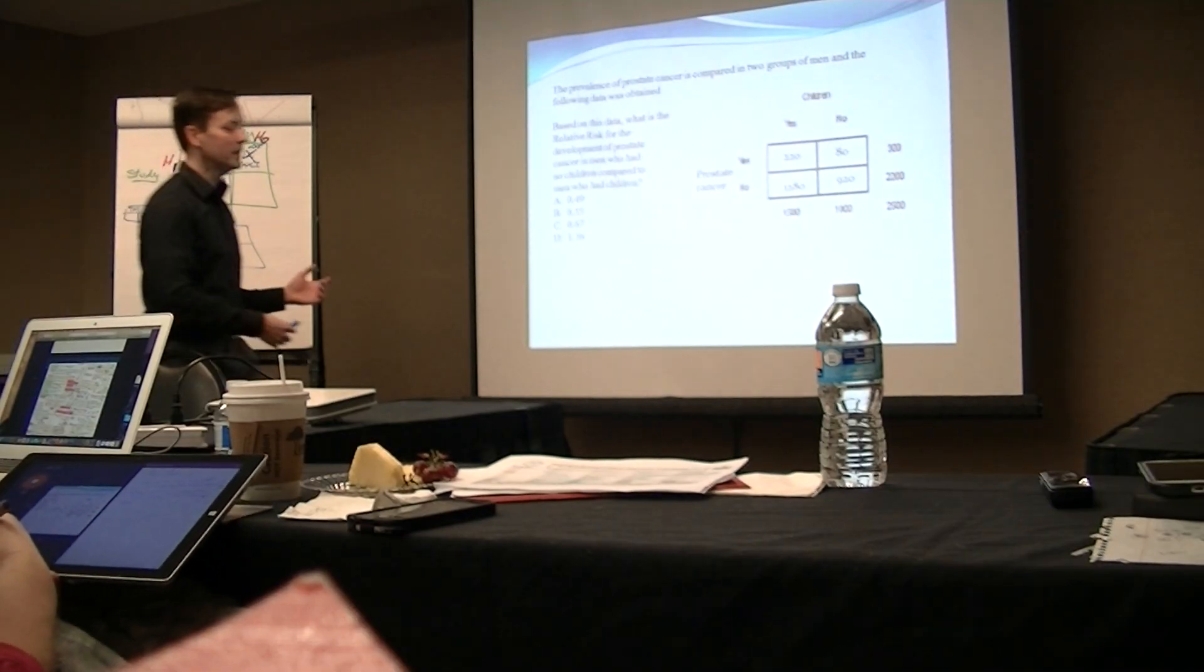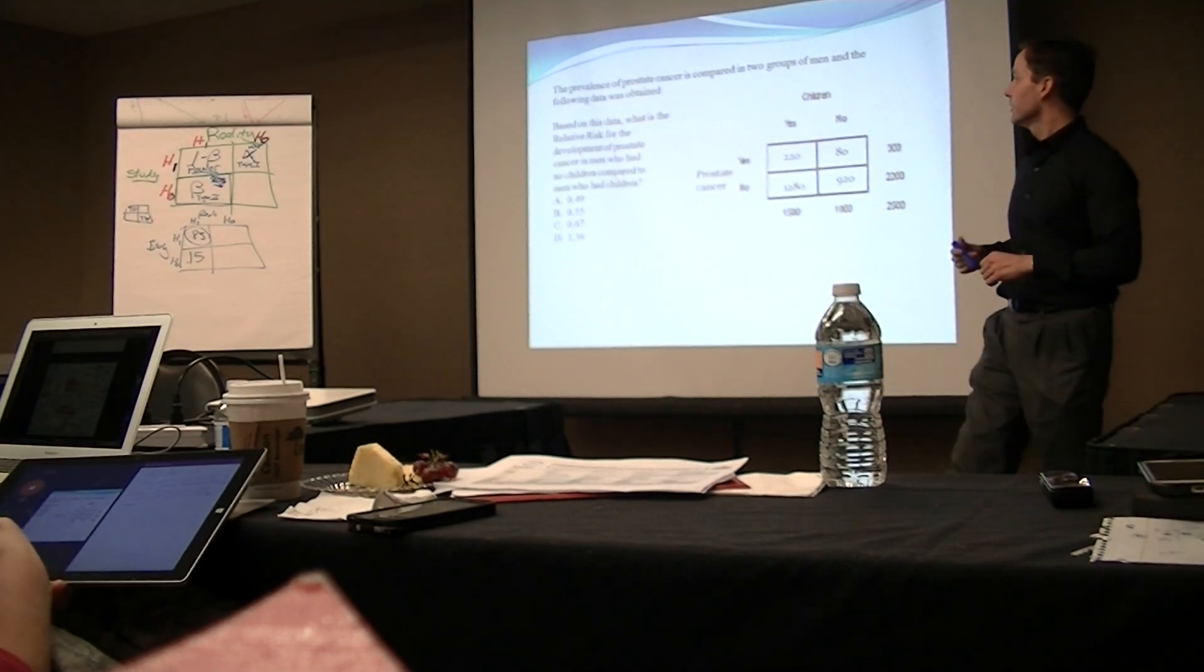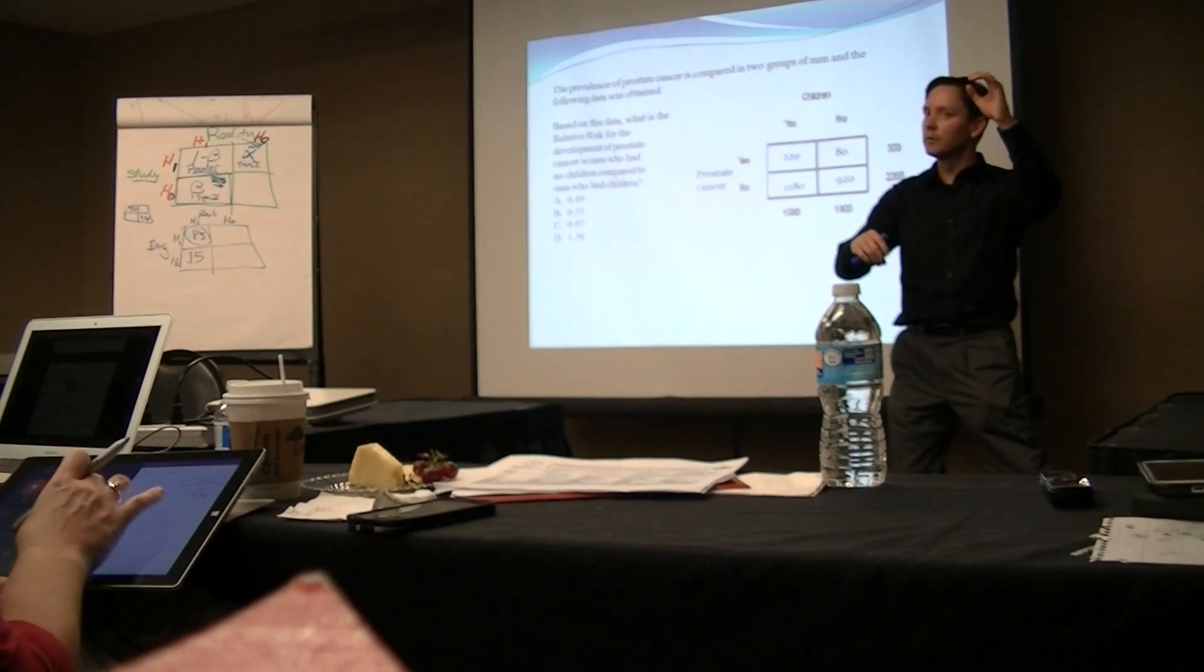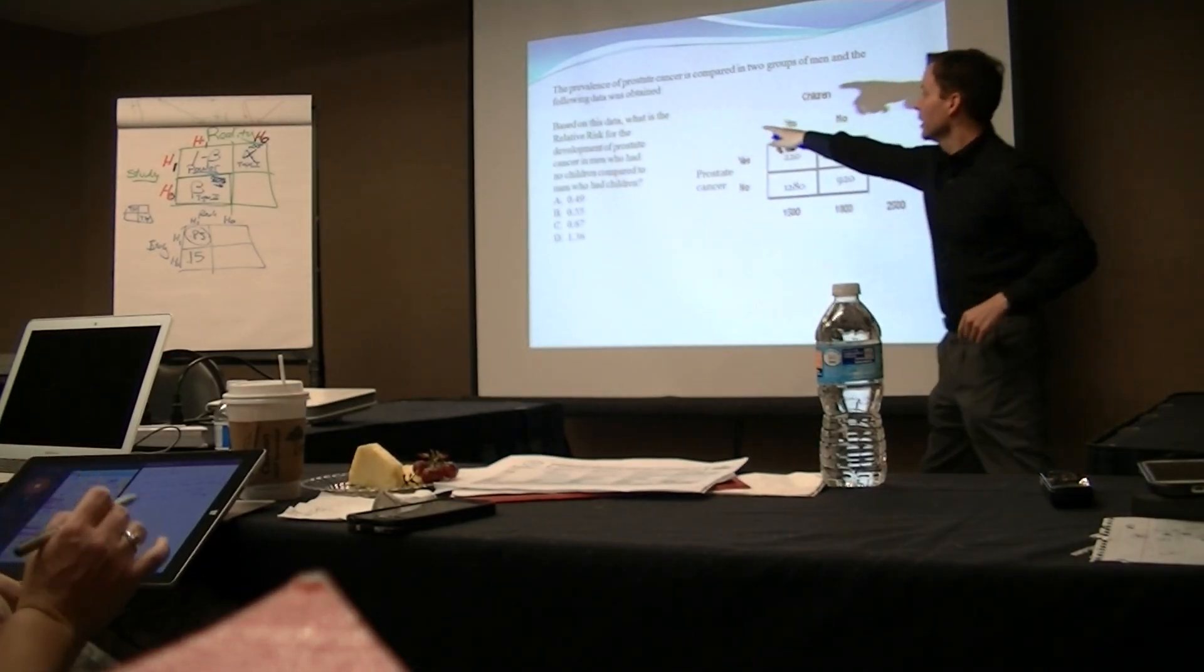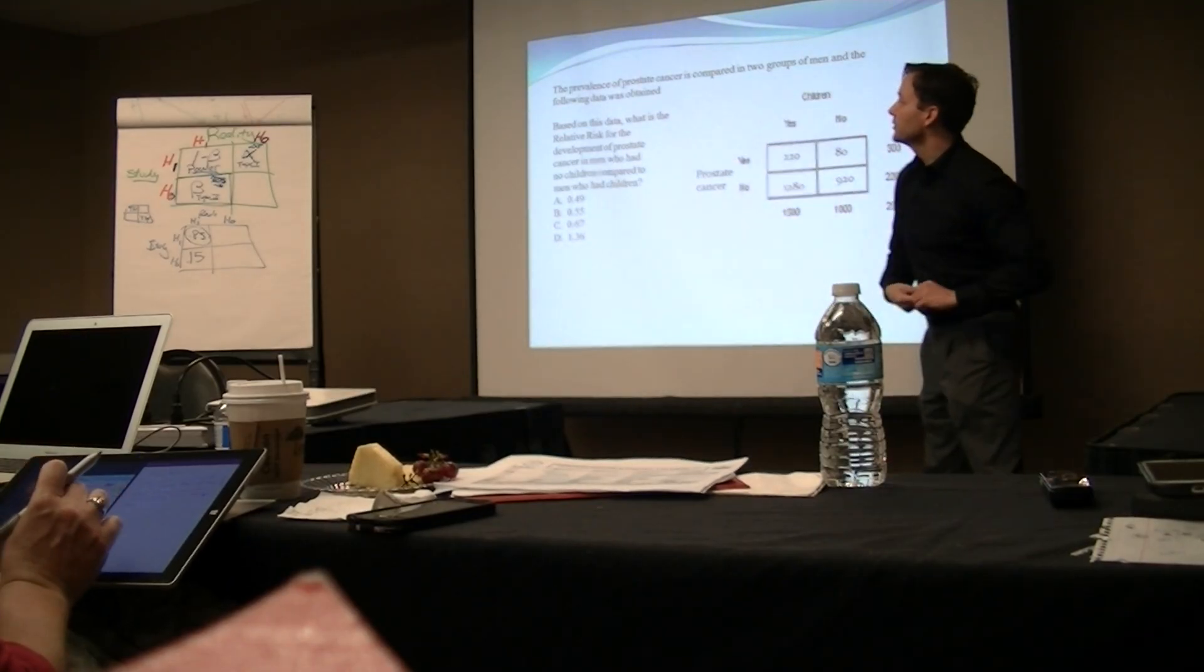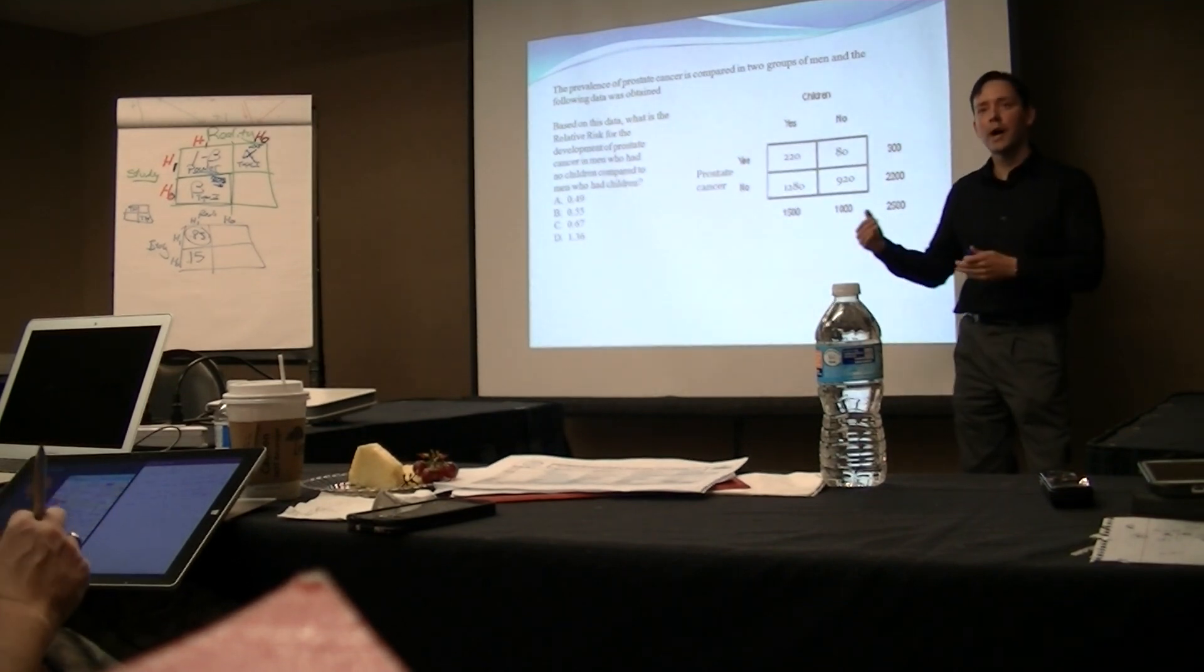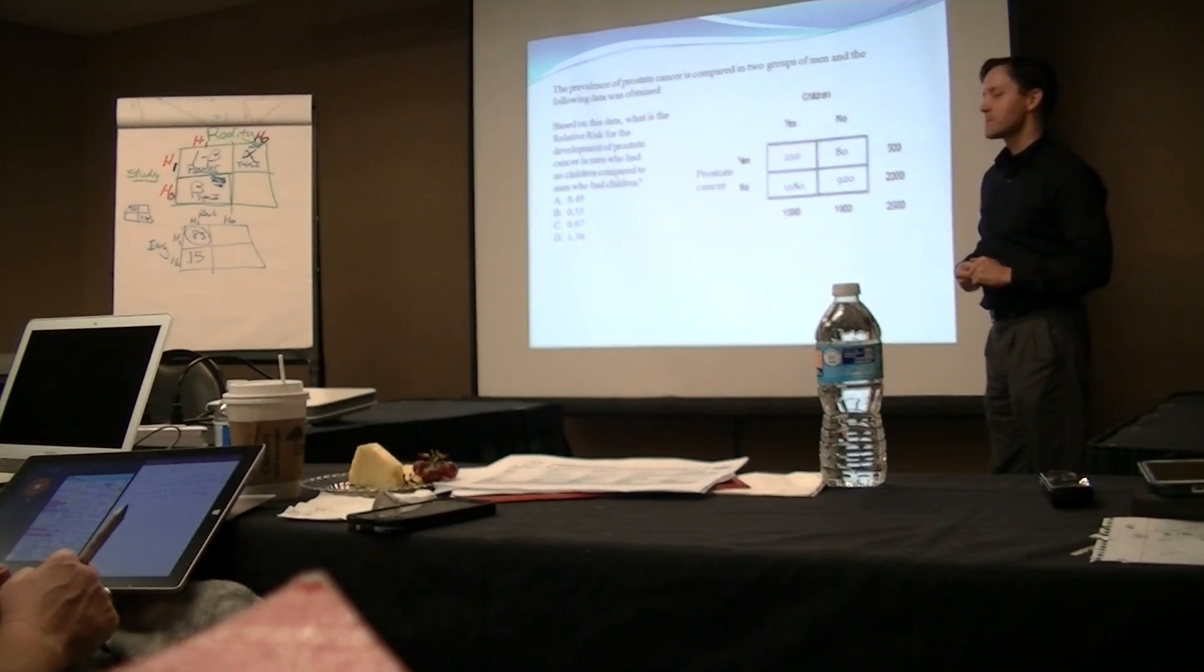Back to some, a little bit more challenge. The prevalence of prostate cancer is compared to two years of men, and the following data was obtained. Based on the data, what is the relative risk? Relative risk, you guys ask for relative risk, not odds ratio. Based on data, what is the relative risk for development of prostate cancer in men who had no children compared to men who had children?